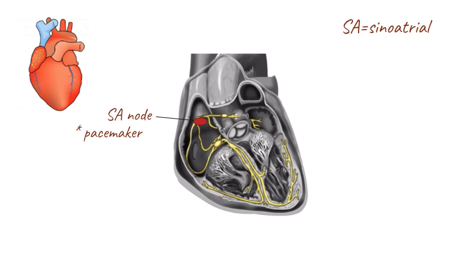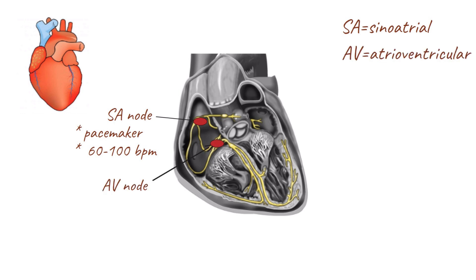The SA node is located in the right atrium and automatically generates an electrical impulse at a rate of 60 to 100 times per minute. These electrical impulses from the SA node initiate atrial contractions and then travel to the atrioventricular node, or AV node, located in the interatrial septum.